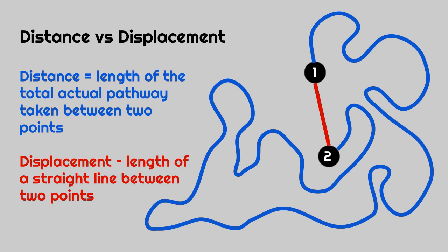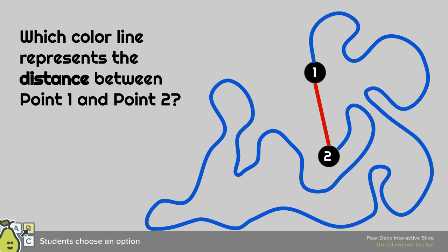Distance versus displacement. Distance is the length of the actual pathway taken between two points. That's in blue. If we started at one, that's a reference point, go around until we end up at two. Now the displacement is the length of a straight line between two points, just from the initial point to the ending point. We want to do displacement from time to time, and remember that's a vector quantity.